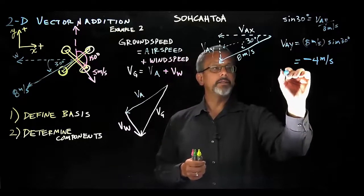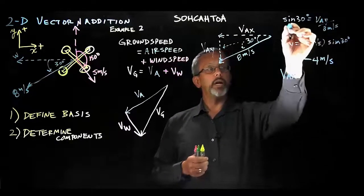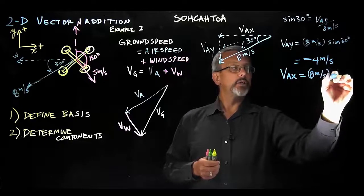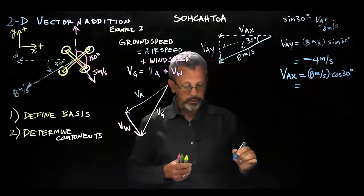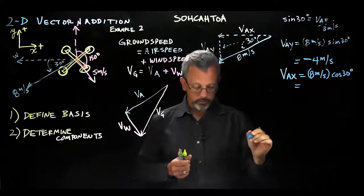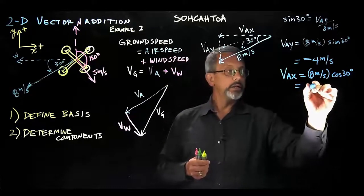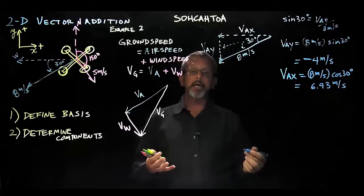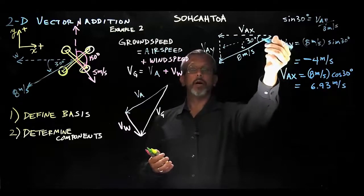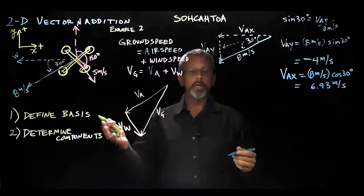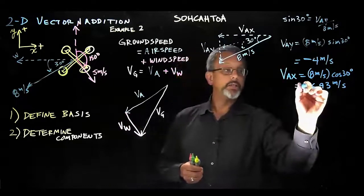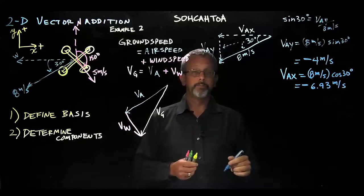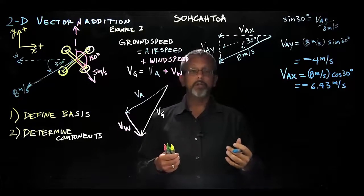For VAx, using cosine: VAx equals 8 meters per second times cosine of 30 degrees. Cosine of 30 degrees is 0.866, giving 6.93 meters per second. The x component points to the left or west, and east is positive, so VAx = −6.93 meters per second. It's important to remember that negative value when we add components later.